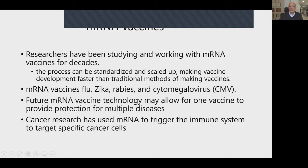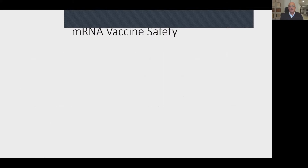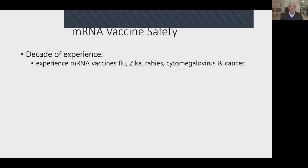If the virus drifts with new strains, this vaccine approach can be readily changed and new vaccines produced quickly. Moderna has also been in the business of cancer research, using mRNA to trigger the immune system to target specific cancer cells. We've known for a long time that the immune system wants to get rid of cancer cells but is blocked from doing so. This technology is proving very beneficial in treating cancers, and you're going to see a lot more of this in the near future.